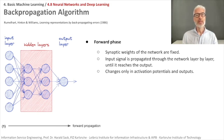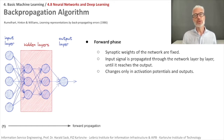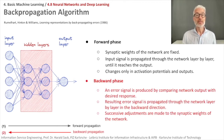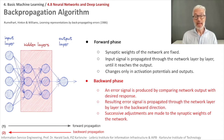Backpropagation, introduced by Rumelhart and Hinton, distinguishes two phases: a forward phase and a backward phase. In the forward phase, the synaptic weights are fixed and the input signal is propagated through the network layer by layer until it reaches the output, changing only the activation potentials and output. Then in backpropagation, an error signal is produced by comparing the network output with a desired response, and this error signal is propagated through the network layer by layer in the backward direction.